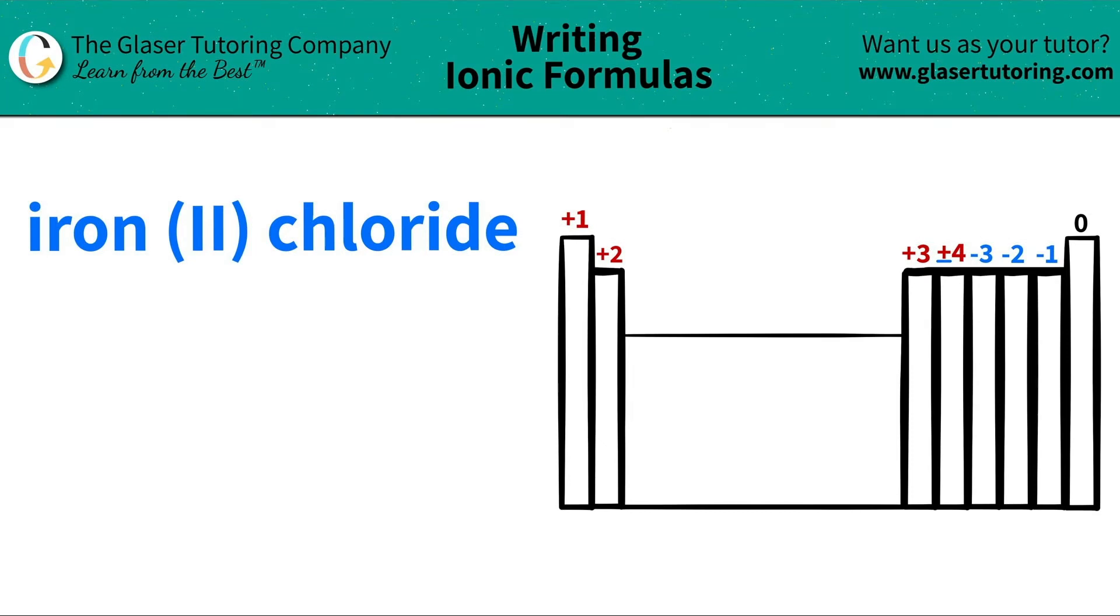Today, we are going to be writing the formula for the ionic compound iron(II) chloride. So let's see where these two elements are located on the periodic table, and then we'll write the formula from there.